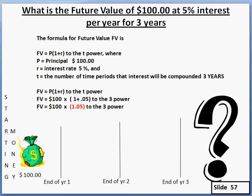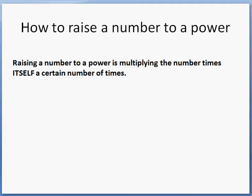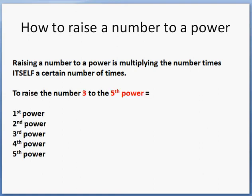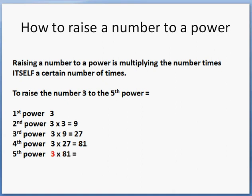Now we need to raise 1.05 to the third power. Raising numbers to a power simply means multiplying a number by itself a certain number of times. For example, raising 3 to the fifth power: the first power is 3; the second power is 3 times 3, which equals 9; the third power (cubing) is 9 times 3, which equals 27; the fourth power is 27 times 3, which equals 81; and the fifth power is 81 times 3, which equals 243.